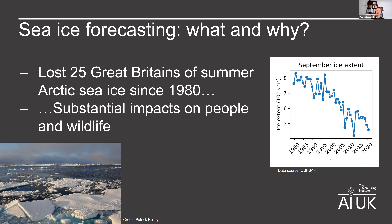We could potentially use accurate sea ice forecasts as an early warning system to help us adapt and mitigate these impacts, similarly to how weather forecasts help us anticipate extreme weather events like hurricanes. Unfortunately, sea ice forecasting is very difficult to do, partly because sea ice has very complex interactions with the ocean beneath and the atmosphere above. As a result, physics-based forecasting systems have struggled to produce accurate forecasts.